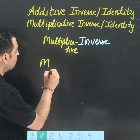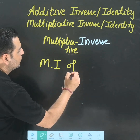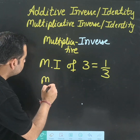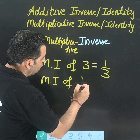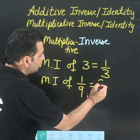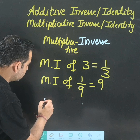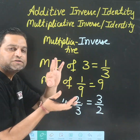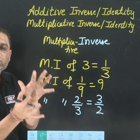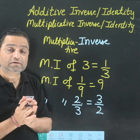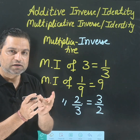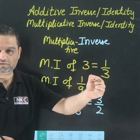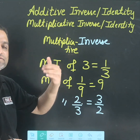For example, multiplicative inverse of 3 is 1 over 3; multiplicative inverse of 1 over 9 is 9; multiplicative inverse of 2 over 3 is 3 over 2. We just need to flip the numerator and denominator. The condition to remember: additive inverse — the addition result should be 0; multiplicative inverse — the multiplication result should be 1. So two concepts are covered, now let us come to identity.